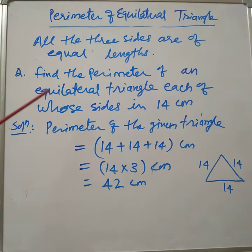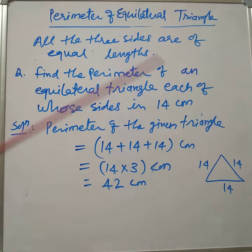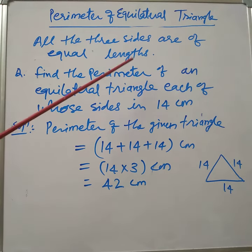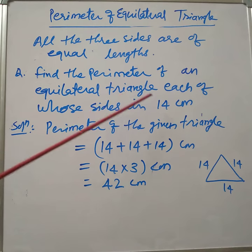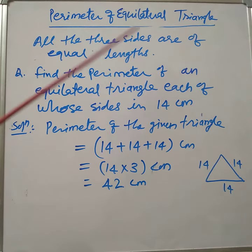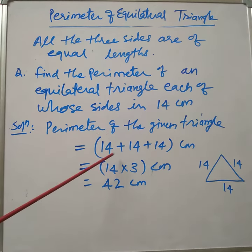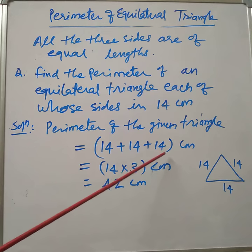Now, the question is: find the perimeter of an equilateral triangle, each of whose sides is 14 cm. The given triangle is an equilateral triangle, and one side is given as 14 cm. As we know, all three sides are of equal length in an equilateral triangle. So, the perimeter of the given triangle is equal to 14 cm plus 14 cm plus 14 cm.